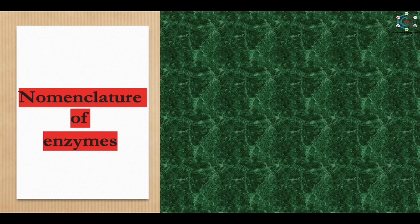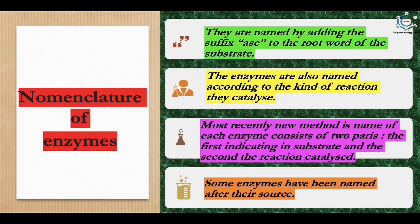Nomenclature of enzymes: they are named by adding the suffix '-ase' to the root word of the substrate, like sucrase, lipase, proteases, nucleases, etc. Enzymes are also named according to the kind of reaction they catalyze, like dehydrogenase for dehydrogenation or polymerase for polymerization. A newer method names each enzyme in two parts: the first indicating the substrate and the second the reaction catalyzed, like glutamate pyruvate transaminase or DNA polymerase. Some enzymes are named after their source, like papain from papaya or bromelain from pineapple.